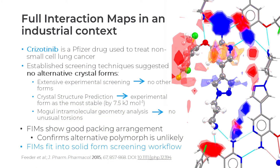An example from an industrial context: I'm showing here crizotinib, which is a Pfizer drug used for treating non-small cell lung cancer. The established screening methods suggested no alternative crystal forms, and that was further confirmed using FIMs. Full interaction maps show good packing arrangement and confirm that another polymorph is not likely, providing more evidence that no further screening should be required unless the expert would think otherwise.